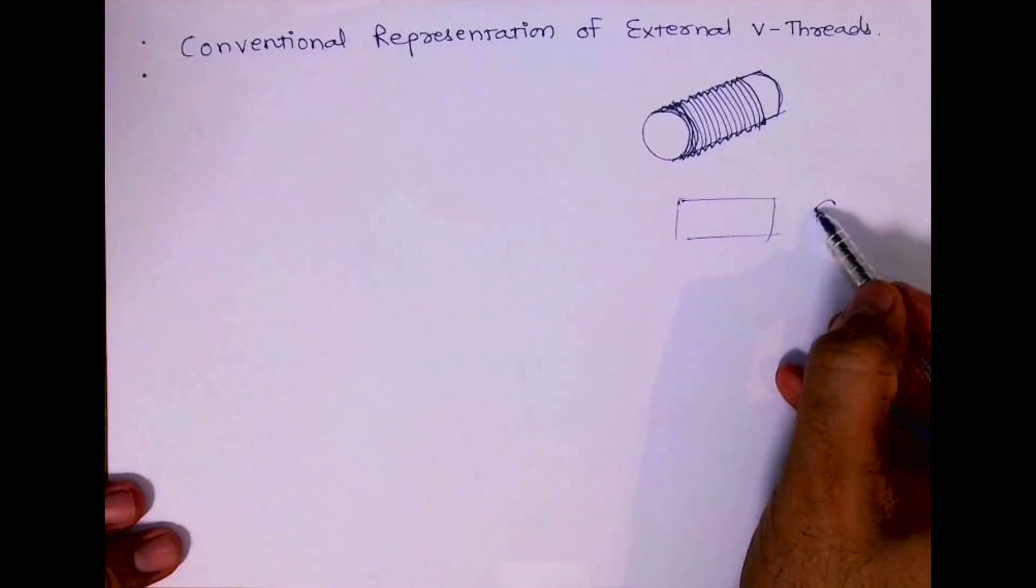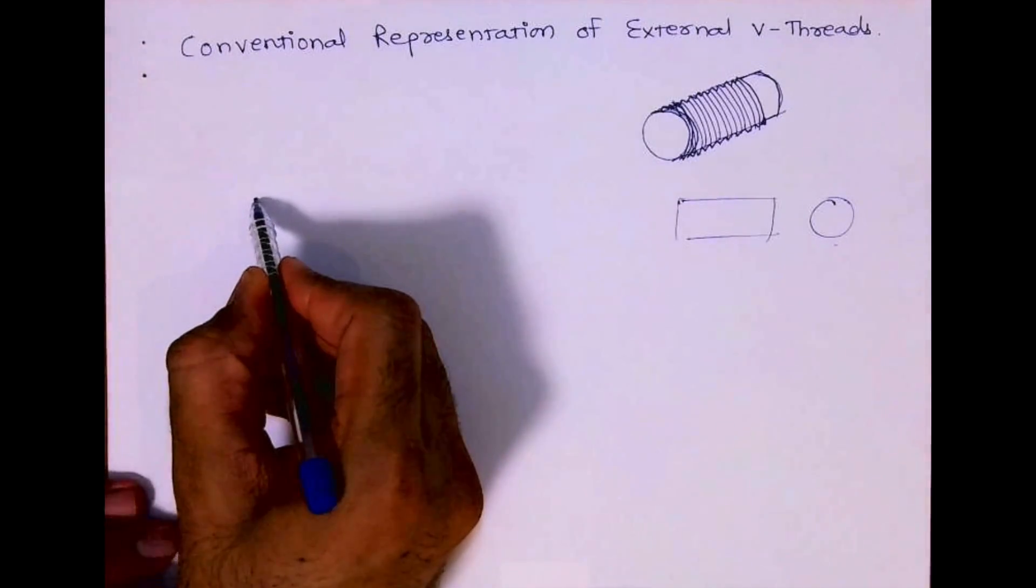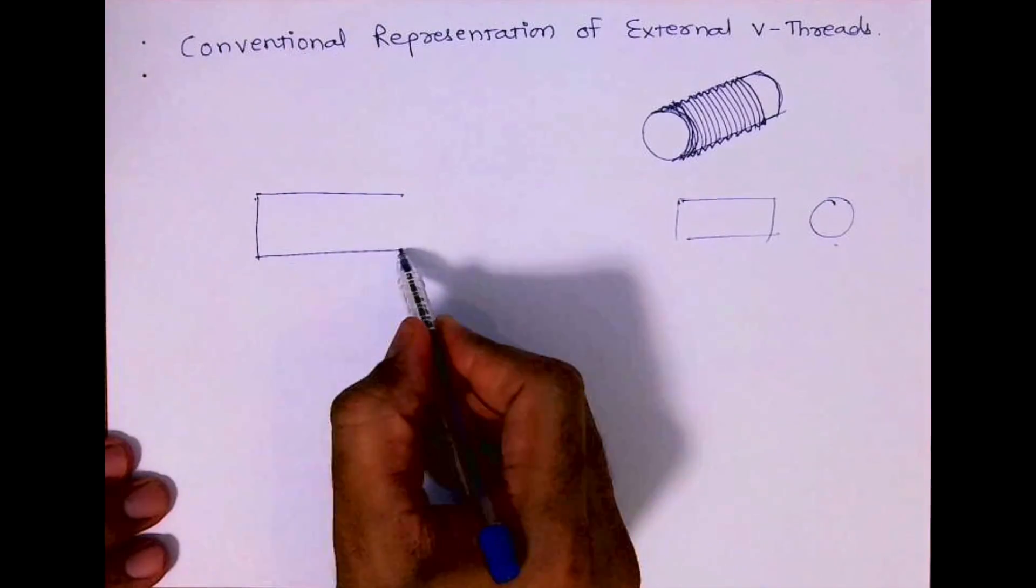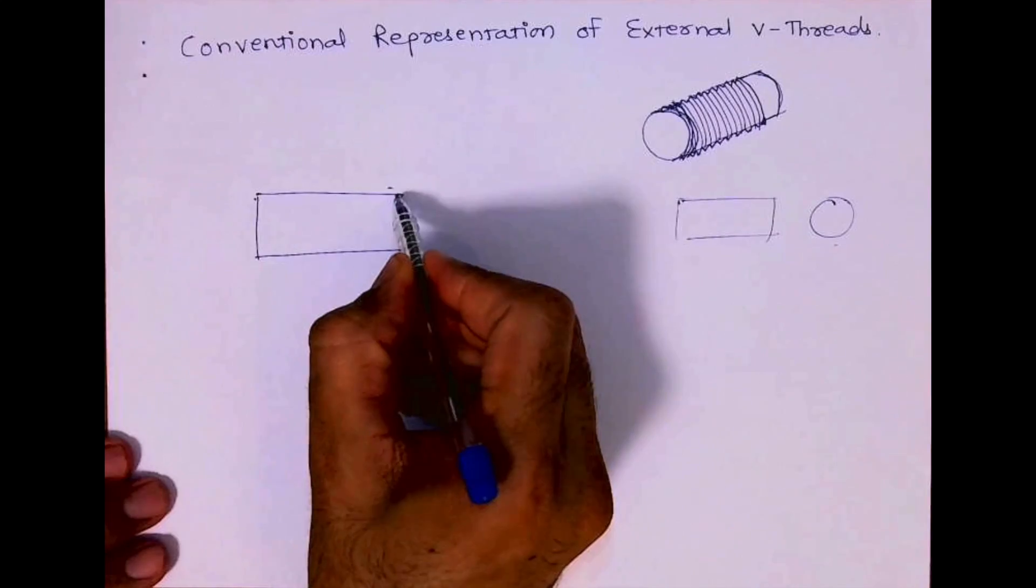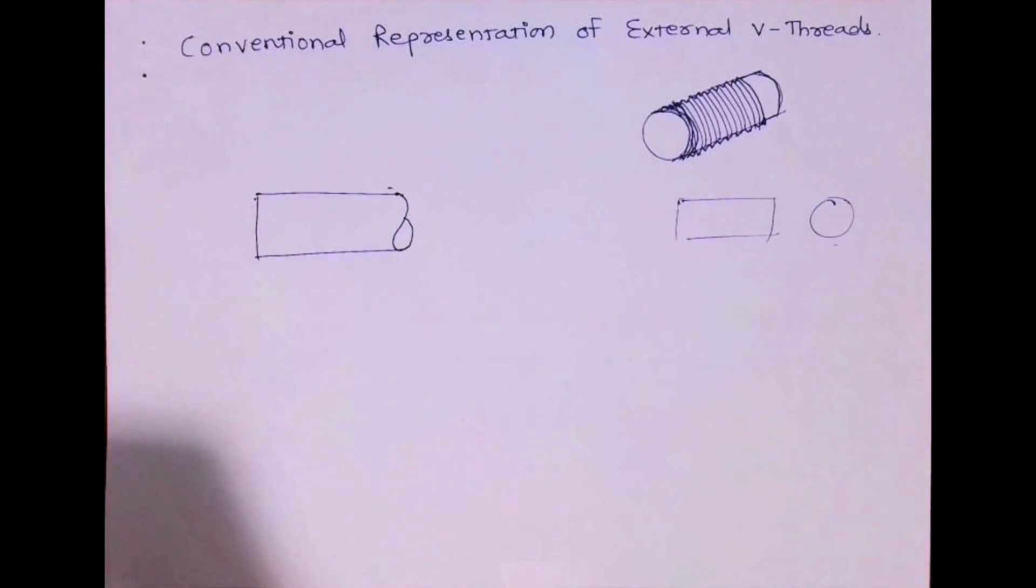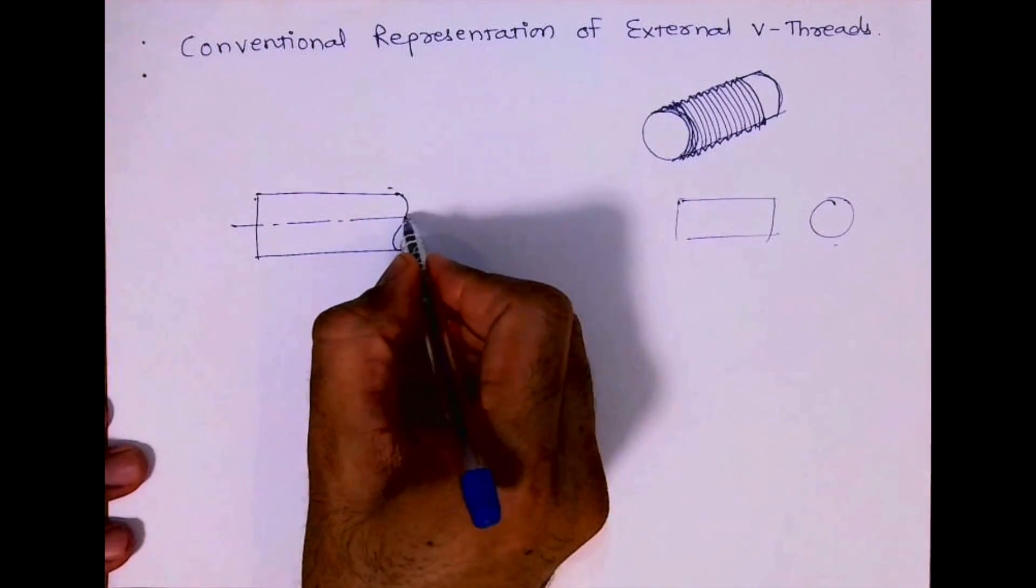This is a normal shaft with threading, so you will draw a rectangle in front view. This shaft can be of any length, so we will draw like this. Remember that this is a convention to show the length when we don't know the length.